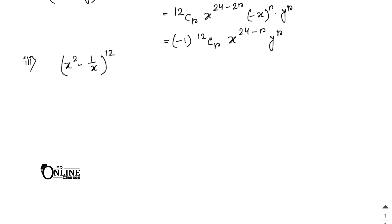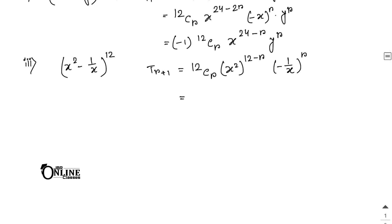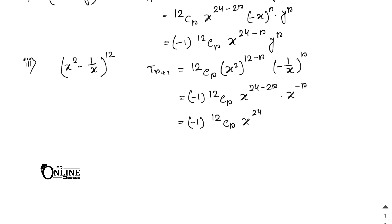Problem 1(iii): (x² − 1/x)^12. T(r+1) = 12Cr · (x²)^(12−r) · (−1/x)^r. Since 1/x = x^(−1), this becomes 12Cr · x^(24−2r) · (−1) · x^(−r). The final answer is (−1) · 12Cr · x^(24−3r).